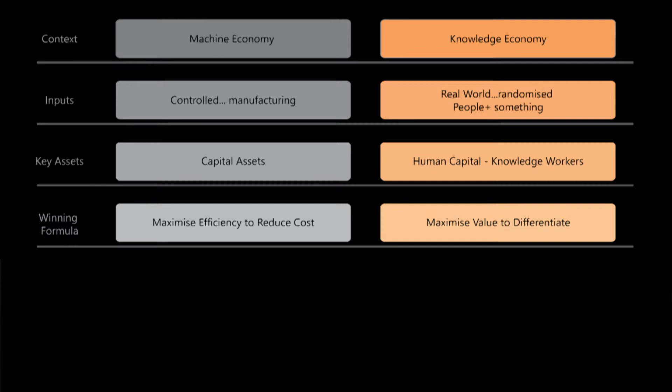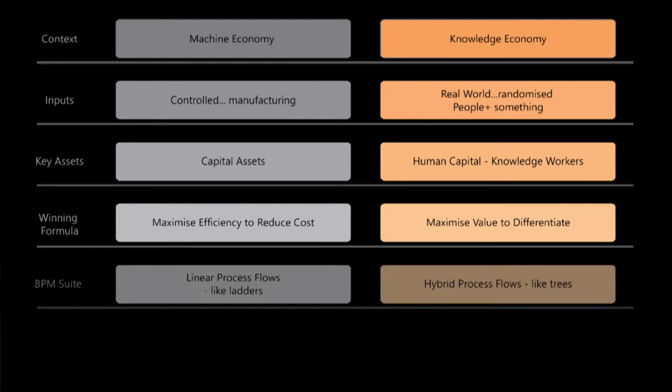It's what leads to a completely different set of process flows. In the machine economy we would rely on a strictly linear way of operating — like a system of ladders, we needed to step on one rung before moving on to the next. But now we're dealing with a more complex and unpredictable environment where the inputs of the process flows are like a tree, with multiple options depending on who's climbing.